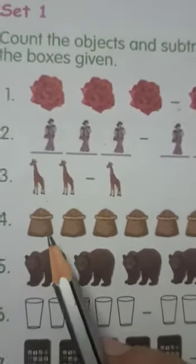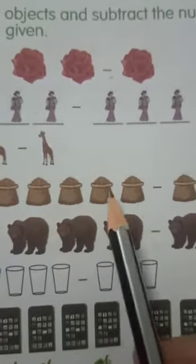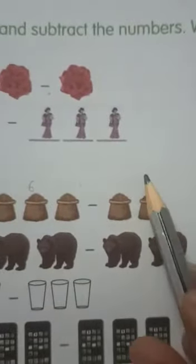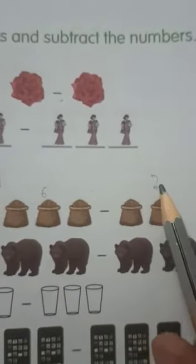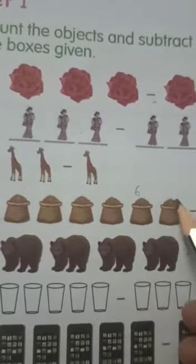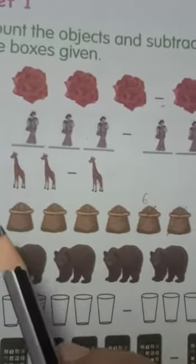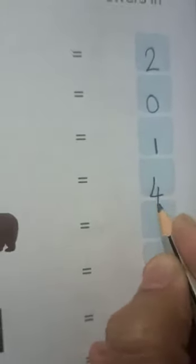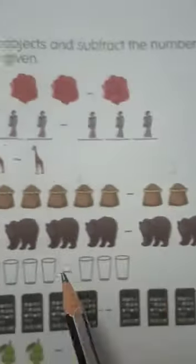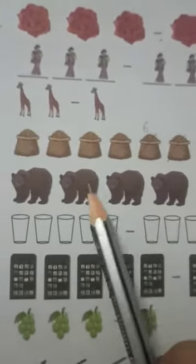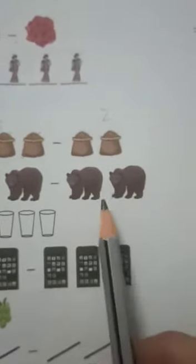Next, how many sacks do we have? One, two, three, four, five, six — we have six. And here only two. If we subtract two from six, we will get only four — one, two, three, four. How many bears do we have first? One, two, three, four. We have to subtract two bears from four.